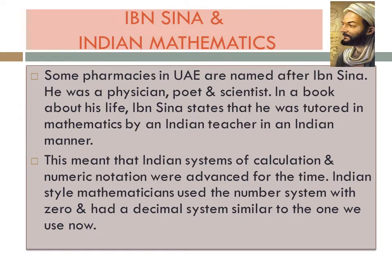Let us look at Ibn Sina and Indian mathematics. Some pharmacies in UAE are named after Ibn Sina. He was a physician, poet, and scientist. In a book about his life, Ibn Sina states that he was tutored in mathematics by an Indian teacher in an Indian manner. This meant that Indian systems of calculation and numeric notation were advanced for the time. Indian-style mathematicians used the number system with zero and had a decimal system similar to the one we use now — the number zero and the decimal system were invented in India.